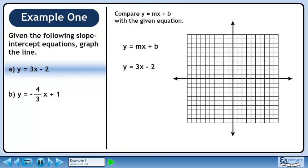Begin by comparing y equals mx plus b to the given equation. The value of m is 3, so the slope of the line is 3.